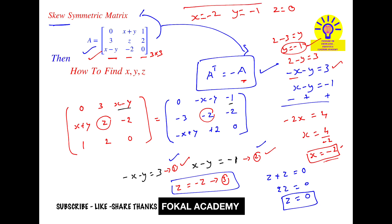We got x equal to minus 2, y equal to minus 1, and z equal to 0. This is the required solution. When x equal to minus 2, y equal to minus 1, z equal to 0, the given matrix is a skew symmetric matrix. These are the values for the given problem. Thanks for watching — please subscribe, like, and share.